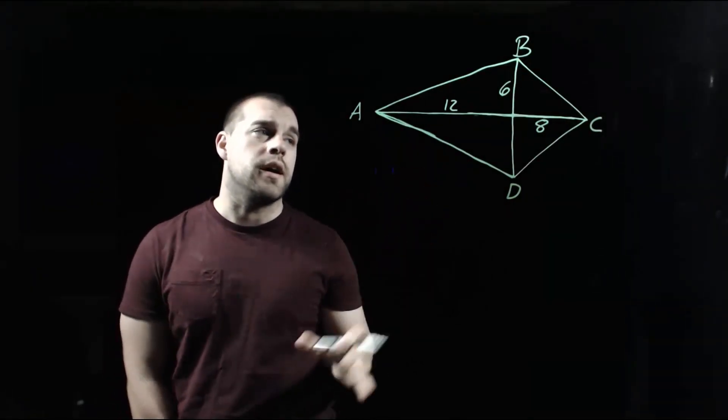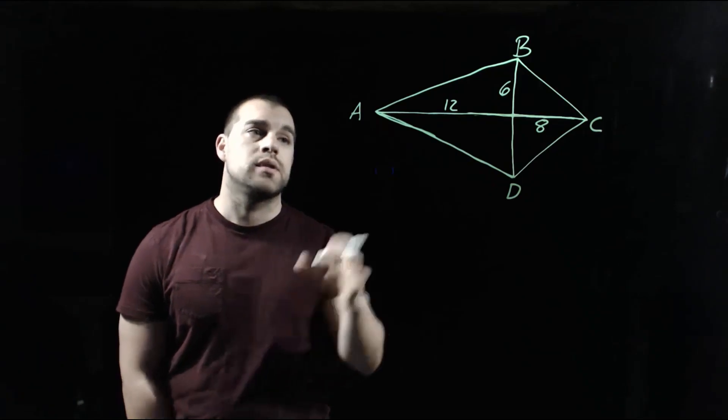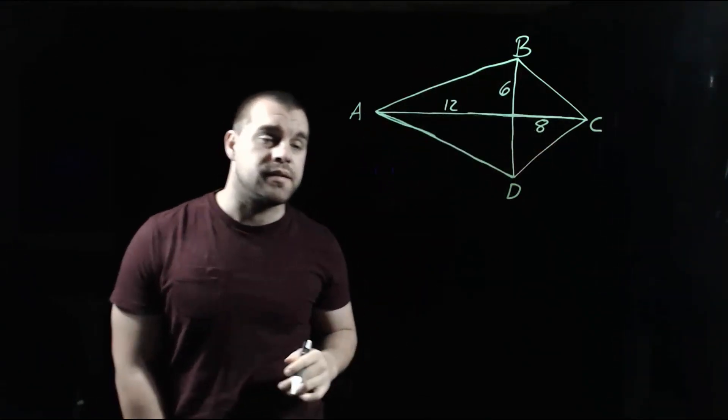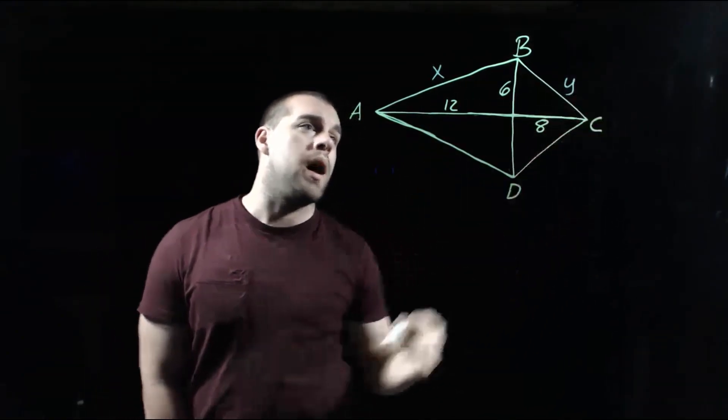In our last example, we're given a kite, and we're given a few measurements within that kite. But what I want to do is I want to find the length of AB, and I want to find the length of BC. So I'm going to label those. I'm going to call AB, that'll be our x, and BC, let's call that y.